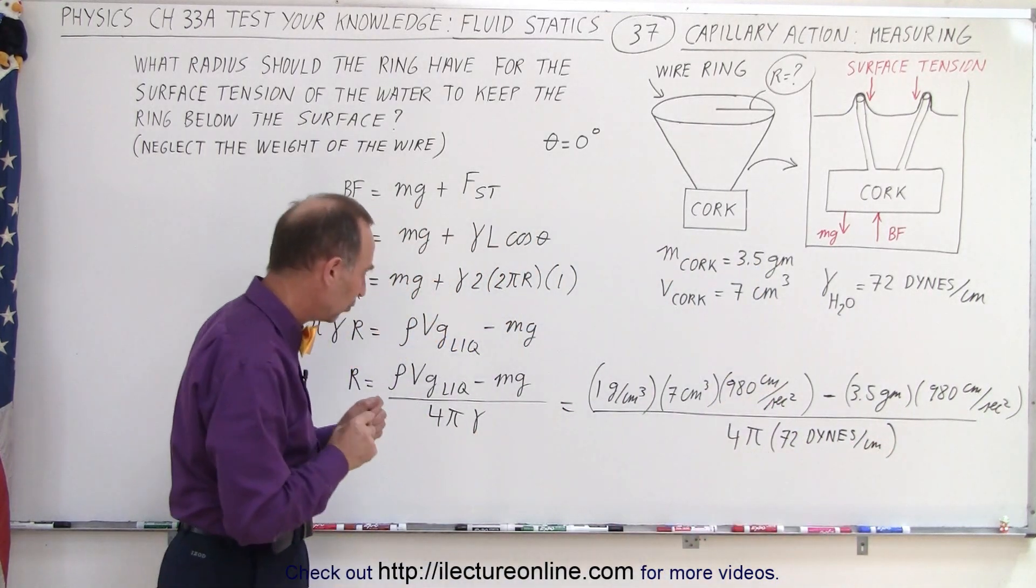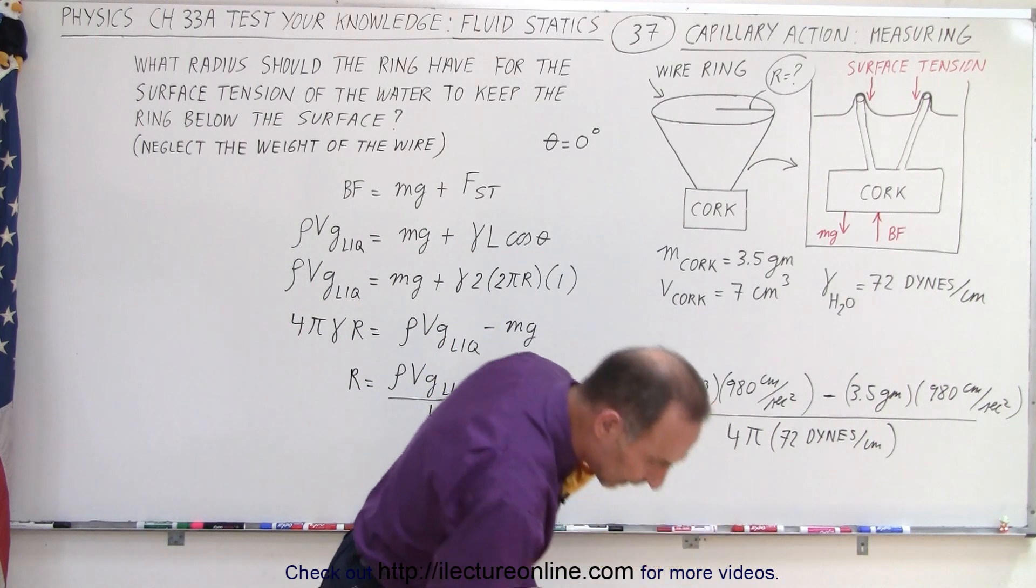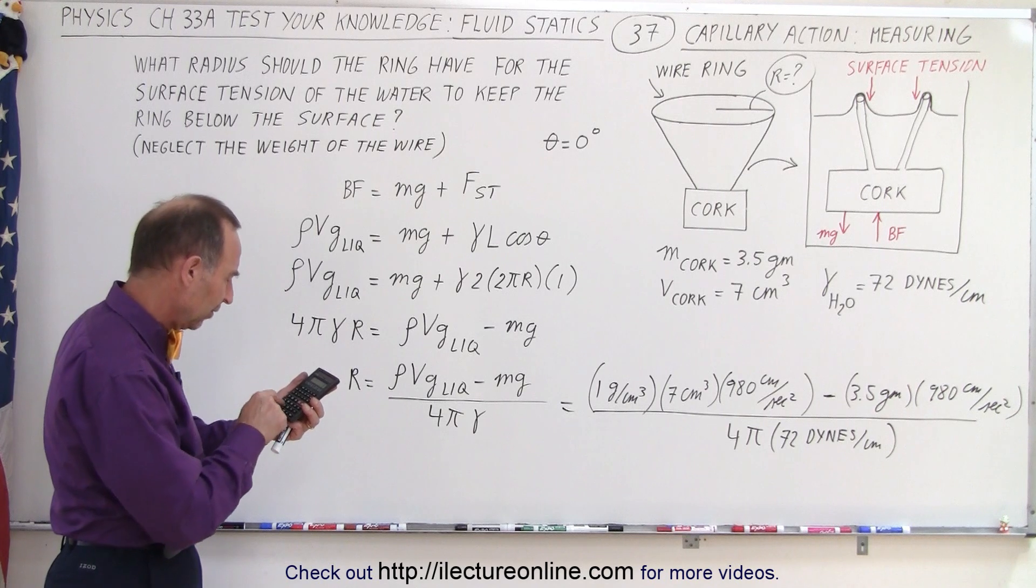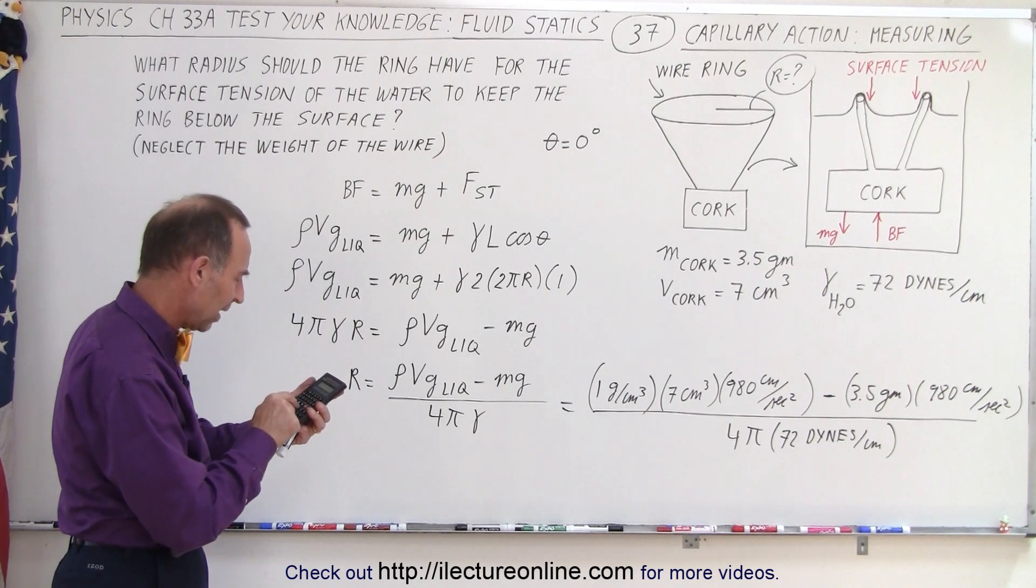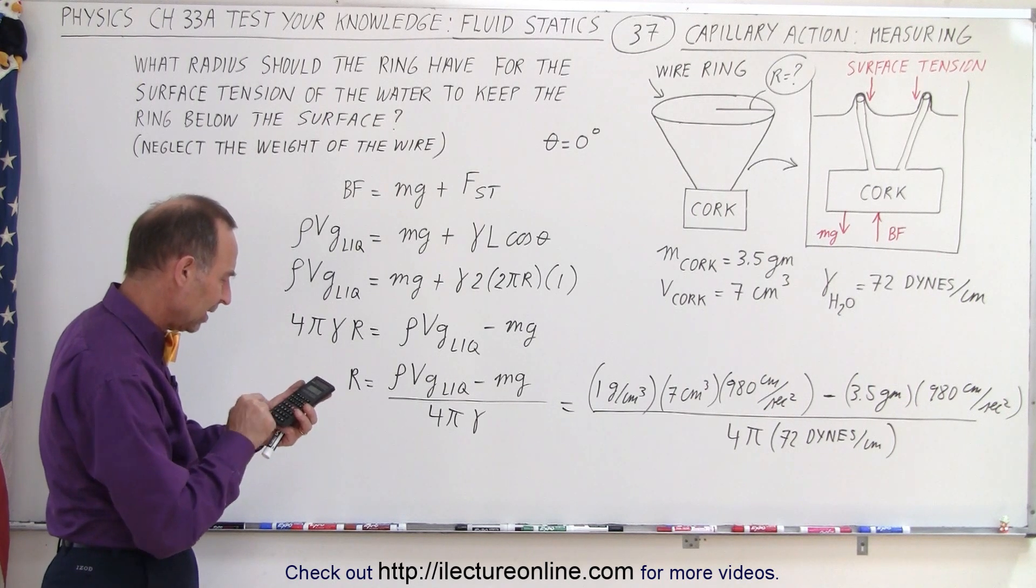There we go. That should give us the radius required on the cork. I'm looking for my calculator - it's hiding here. All right, so we have 7 times 980 minus 3.5 times 980, divide that by 4, divided by π, and divide that by 72...